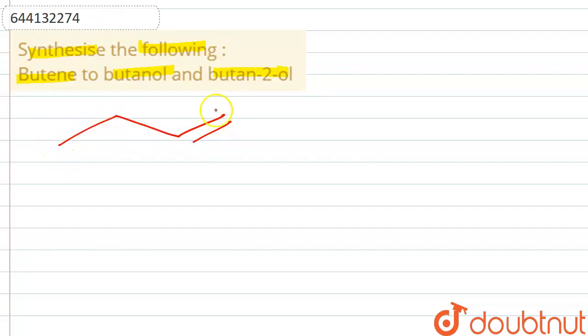This is one, two, three, four carbons - this is butene. Now what we would be doing: first of all we have to synthesize butanol, or we can say butane-1-ol. So we would be simply doing anti-Markovnikov's addition with HBr and ROOR.